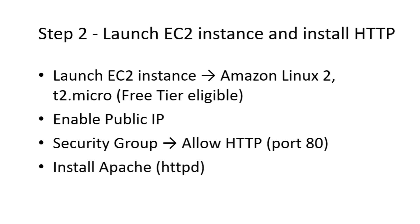Step 2 is about launching our EC2 instance and setting up a simple web server. We'll launch an EC2 instance using Amazon Linux 2 with instance type T2.micro, which is free tier eligible. Be sure to enable a public IP address so the instance can be accessible once the Internet Gateway is configured. Configure the security group to allow inbound traffic on port 80, required for HTTP connections. We'll also add a user data script in the EC2 launch menu that will automatically install and start the Apache HTTP server on boot and create a simple web page for testing. By the end of this step, our web server is running — but without an Internet Gateway, it still cannot be accessed from outside.